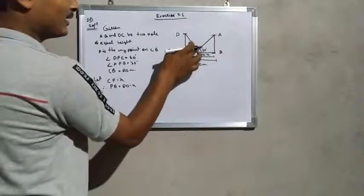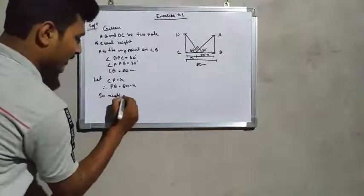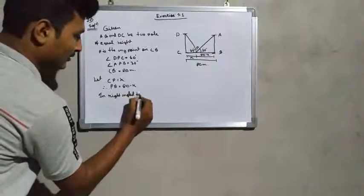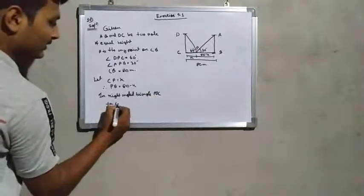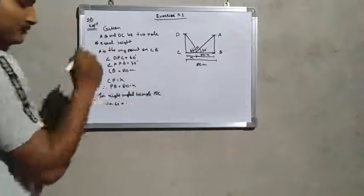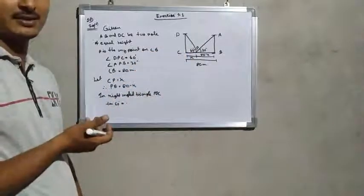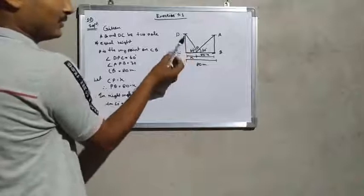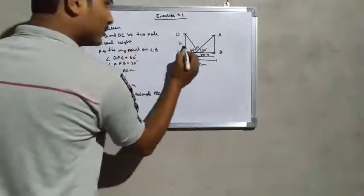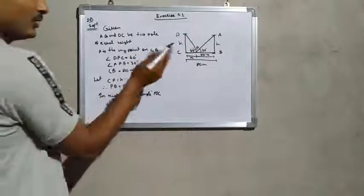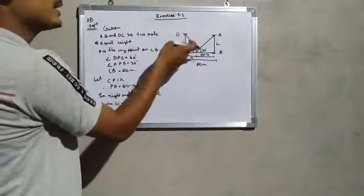In right angle triangle PDC, tan 60 degrees is used. We need to find the height of the poles. These are the poles and this is the height of the poles.